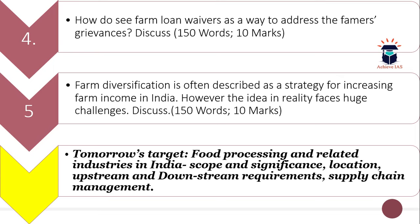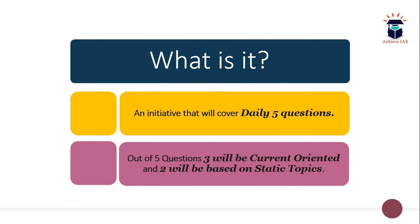Tomorrow's target is food processing and related industries in India — scope and significance, location, upstream and downstream requirements, and supply chain management. That is tomorrow's static topic. For those seeing our video for the first time, this initiative involves covering five questions daily — three from current affairs and two from the static part. Today all five questions were from the static part.